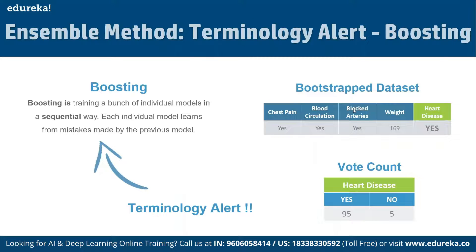Boosting is training a bunch of individual models sequentially, where each model learns from the mistakes of the previous one, improving accuracy step by step. For example, selecting blood flow and blood arteries as variables, we determine which best separates the samples. If blood arteries is the most significant predictor, it is assigned as the root node. We then repeat the same process for each branch node, selecting a random subset of variables.